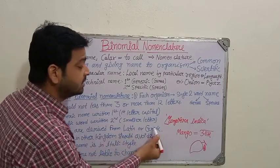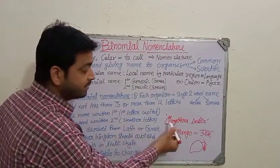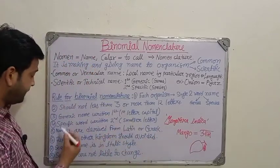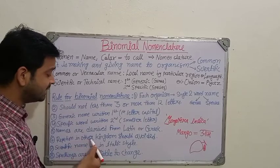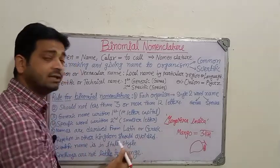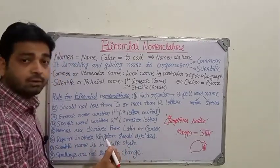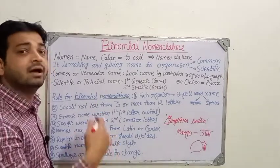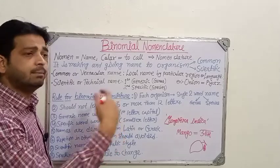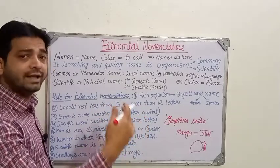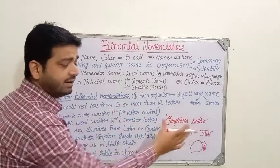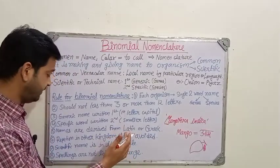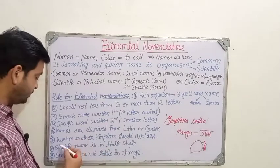Rule five: names are derived from Latin or Greek language. Mangifera and indica are Latin words. Rule six: repetition in other kingdoms should be avoided. When naming an organism, we must check whether the same name already exists in another kingdom — such as the microbial or animal kingdom — since Mangifera indica belongs to the plant kingdom.